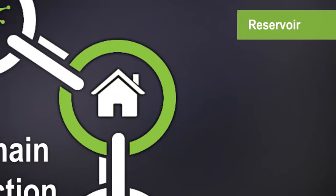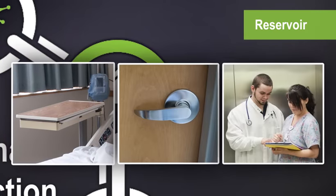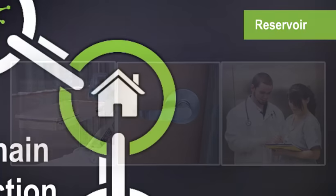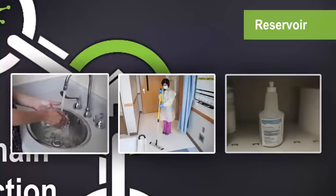The second link is a reservoir. A reservoir is where pathogens can thrive and reproduce, like tabletops and doorknobs and people. Break this link by washing your hands, keeping a clean environment, and disinfecting surfaces.